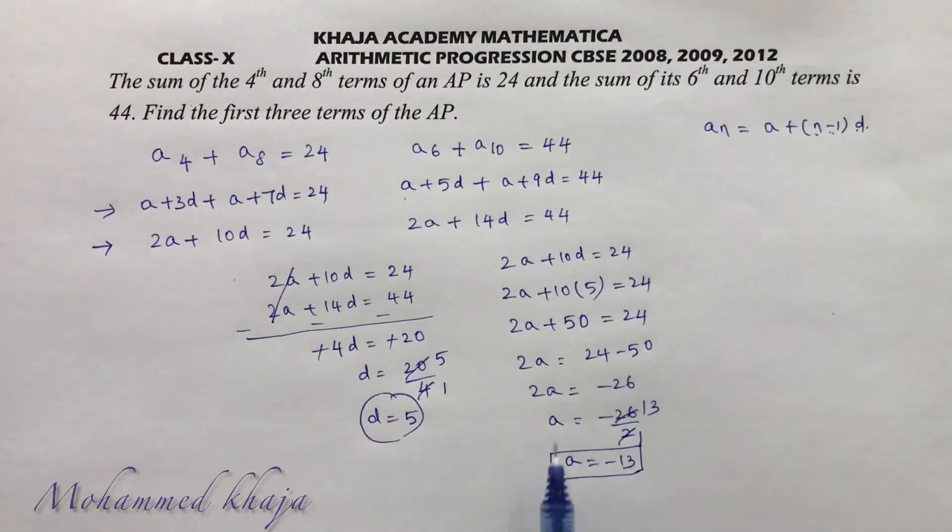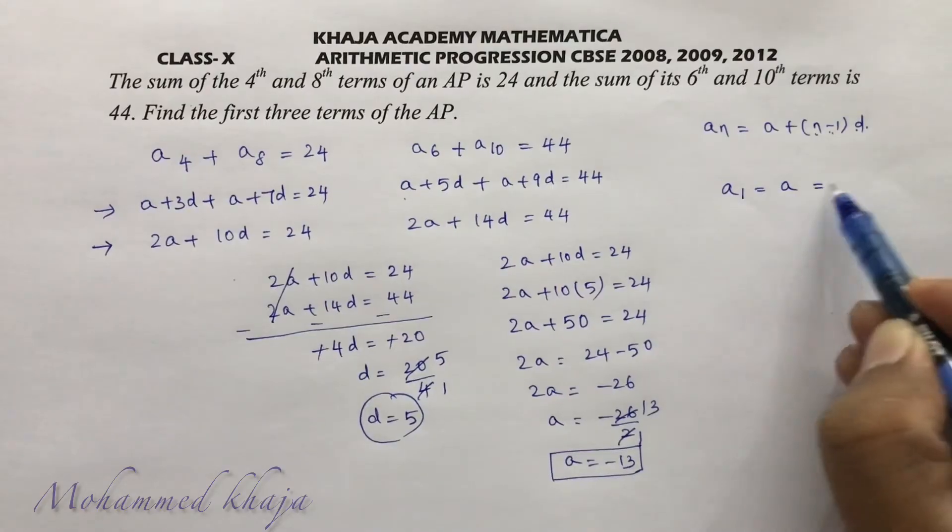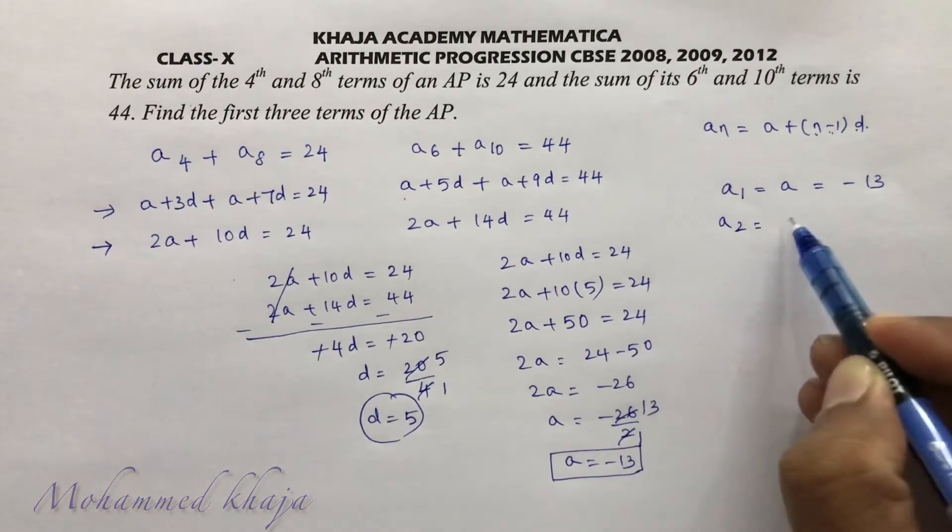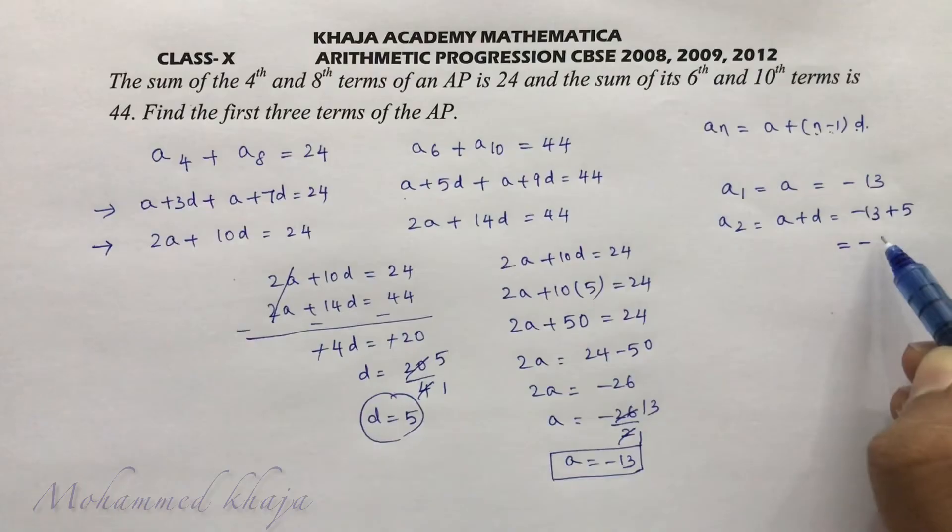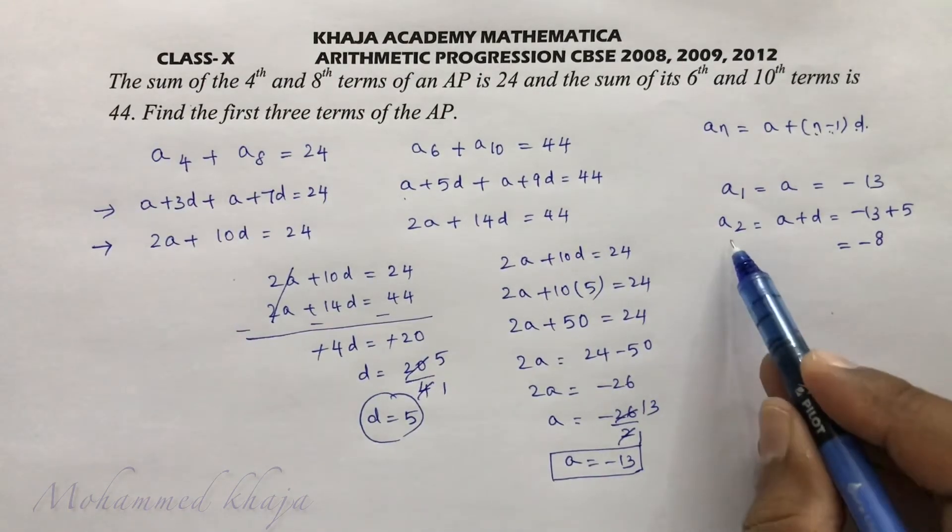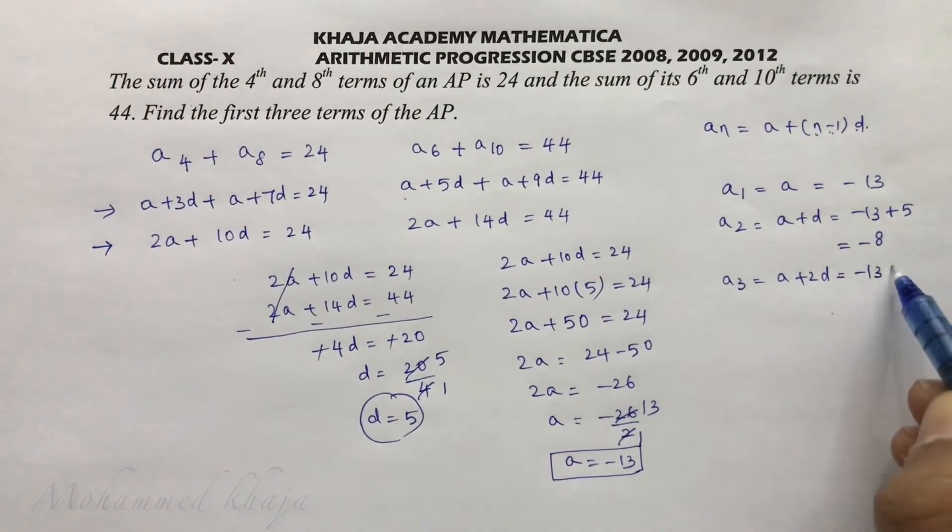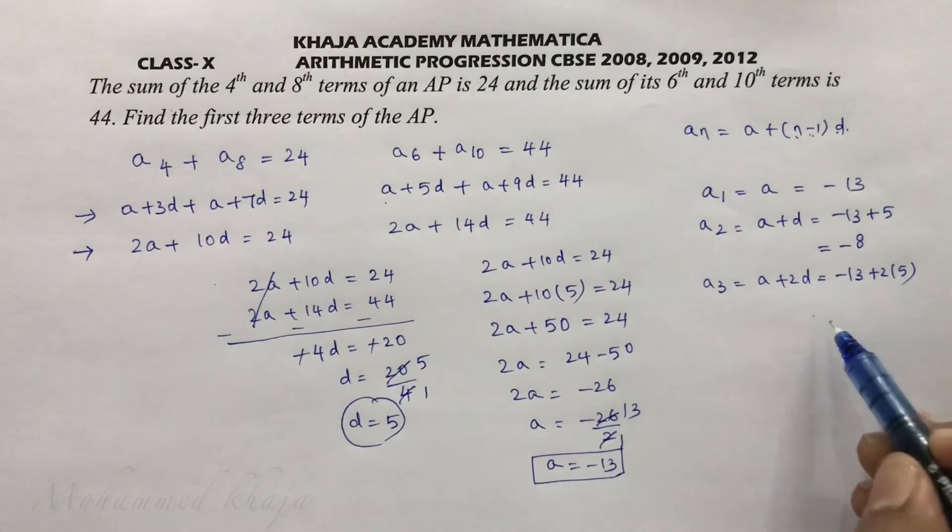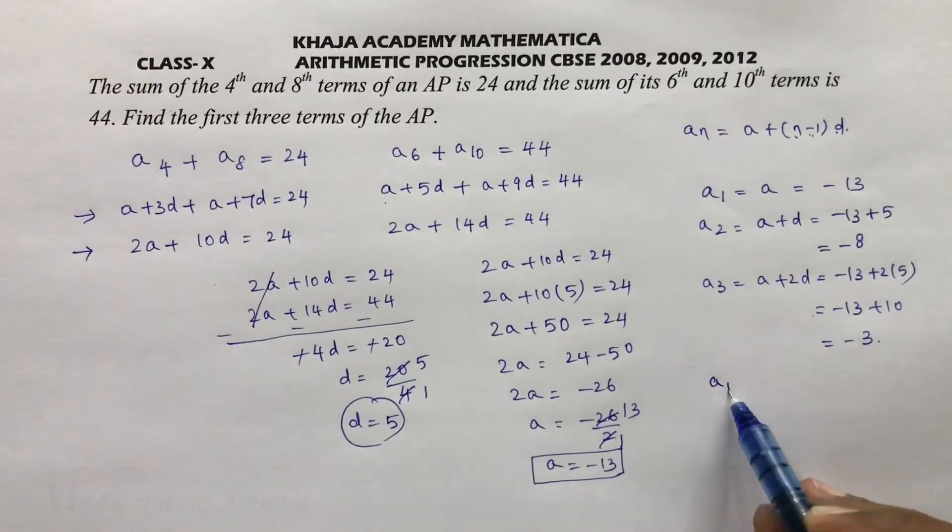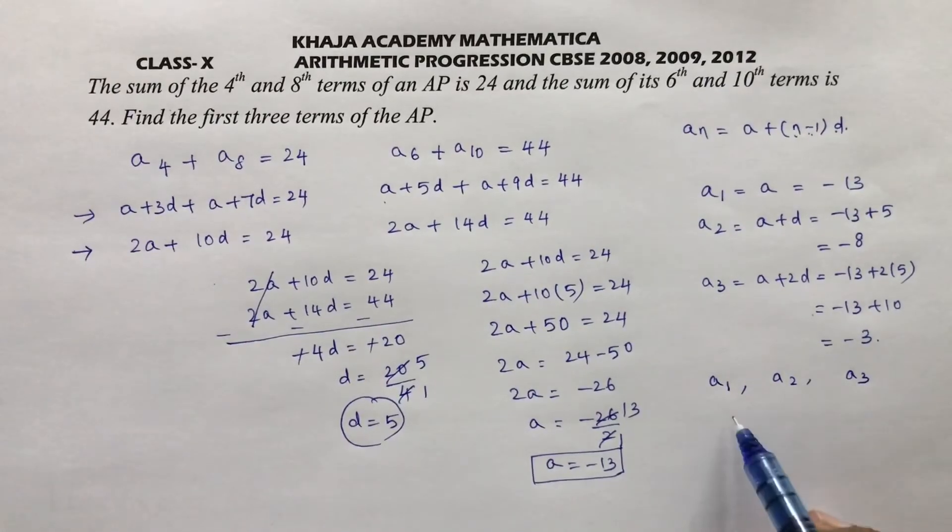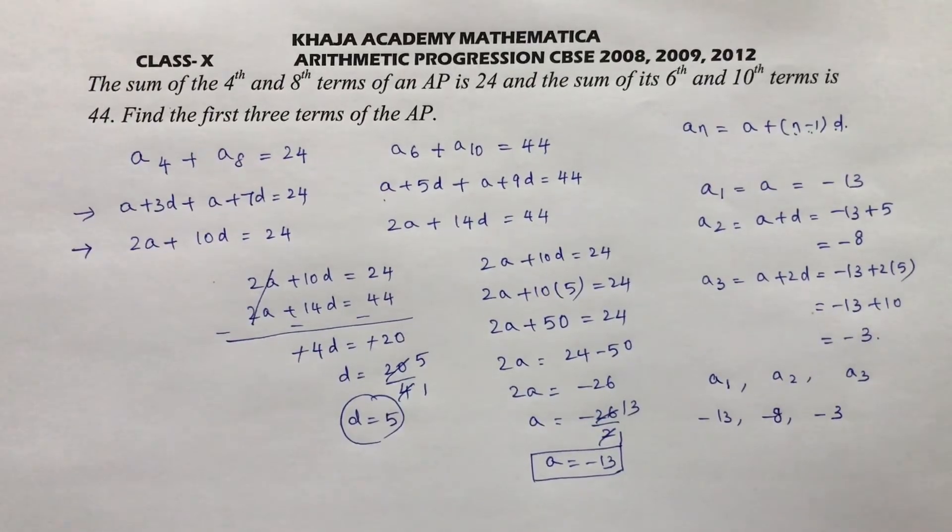You got the value of a and d. Now they are asking for the first three terms. The first term is a, which is -13. Second term is a + d, -13 + 5 is -8. Third term is a + 2d, -13 + 2(5), that is -13 + 10, which is -3. So the three terms a1, a2, a3 are -13, -8, and -3. These are the three terms of an AP.